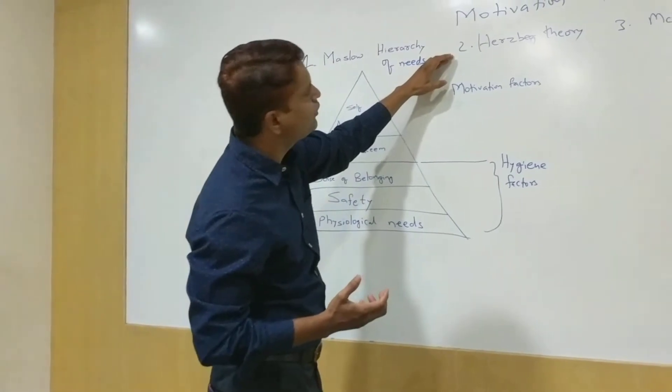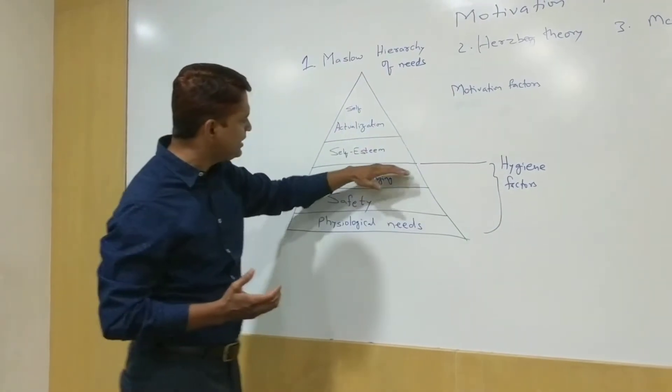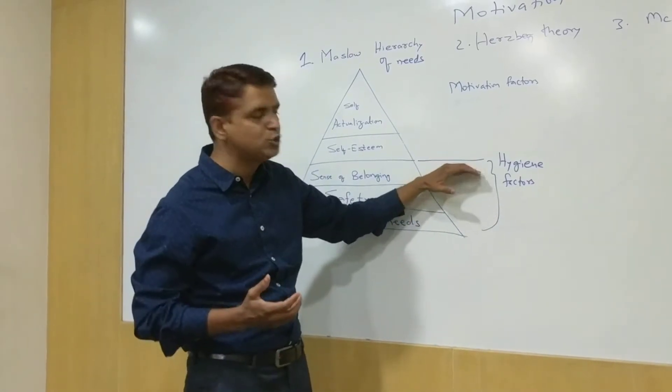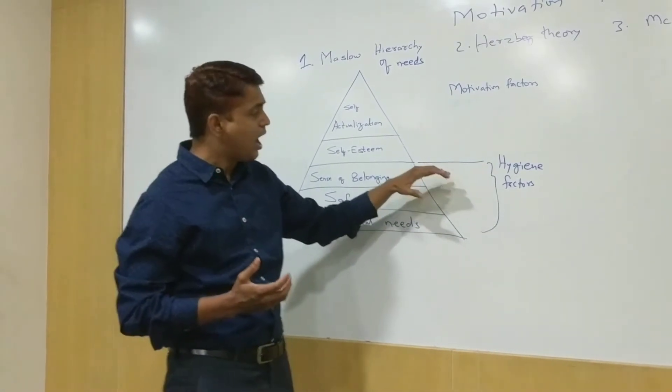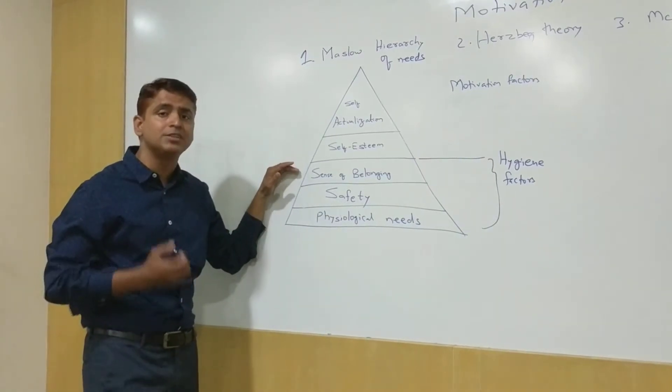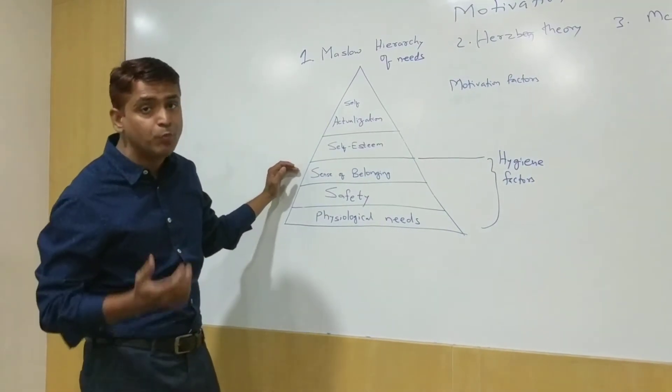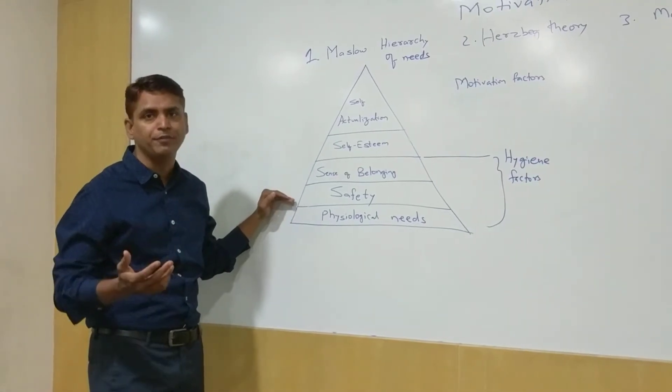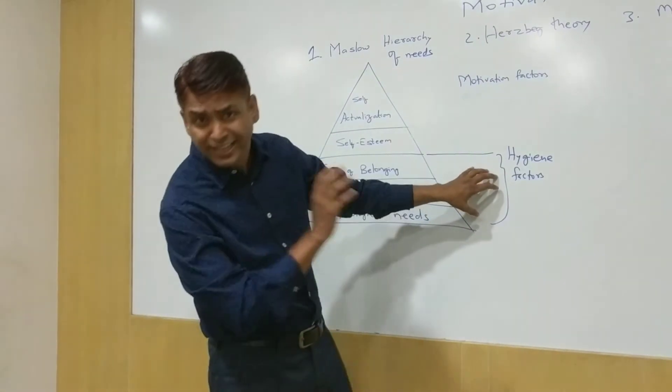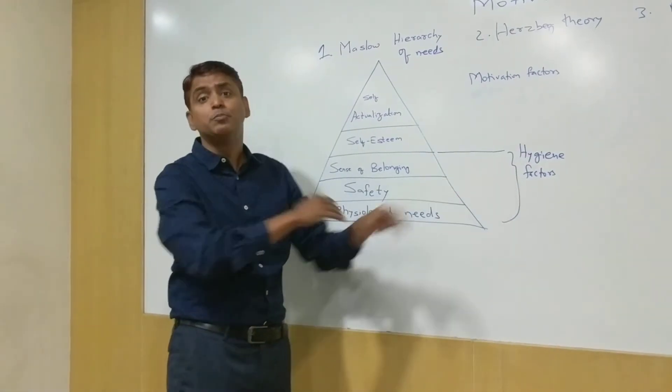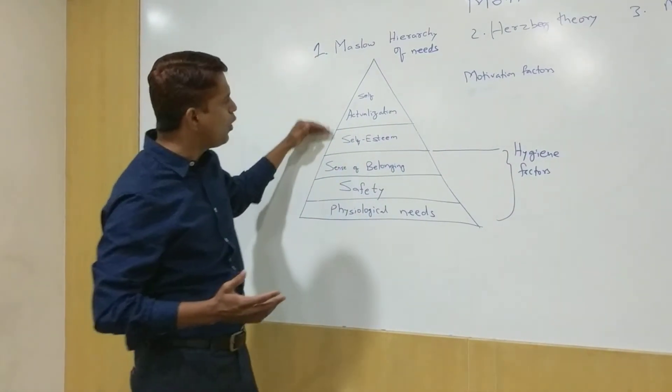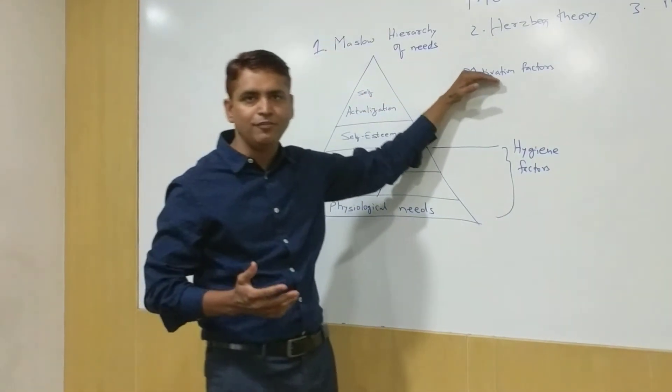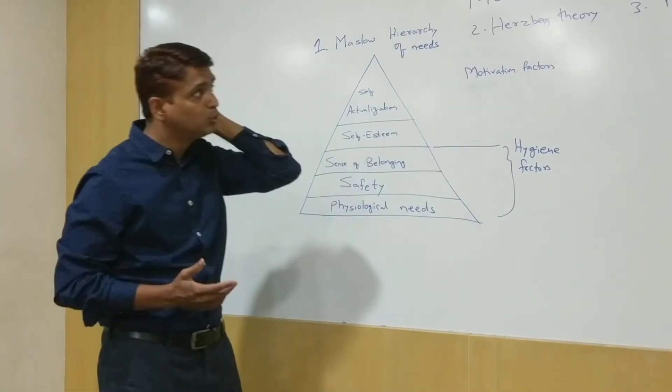Herzberg gave the two-factor theory. He said these three things are hygiene factors—these need to be met. If these things are not present, then someone may get dissatisfied or demotivated. But having these things in place doesn't mean that you will be motivated. So these are hygiene factors; they need to be in place but don't motivate. The next two items in the hierarchy of needs pyramid are the motivational factors. So that's Herzberg's two-factor theory.